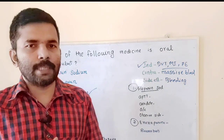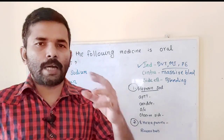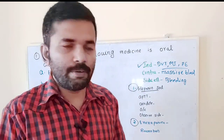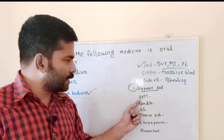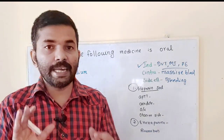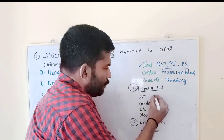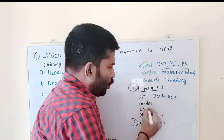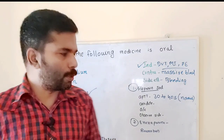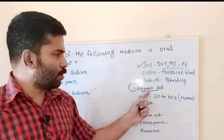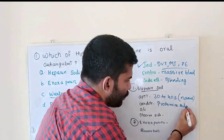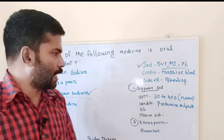We are going to talk about heparin sodium. We use it in the cardiac ICU for unstable angina, atrial fibrillation. After starting heparin sodium, we monitor APTT — activated partial thromboplastin time — and INR. The normal APTT is 30 to 40 seconds. The antidote of heparin sodium is protamine sulfate.